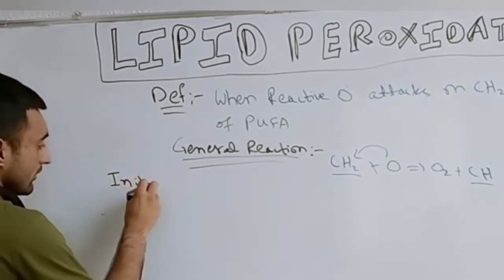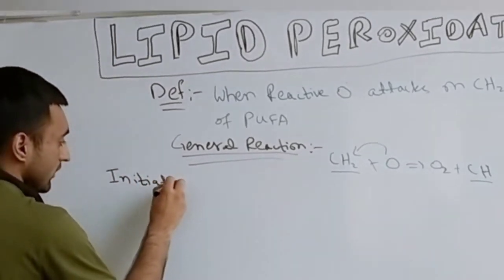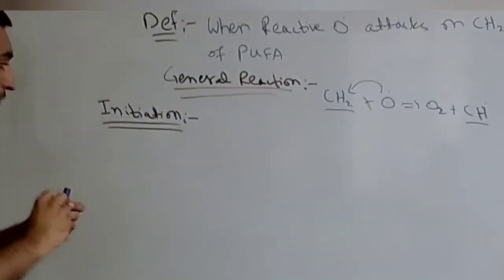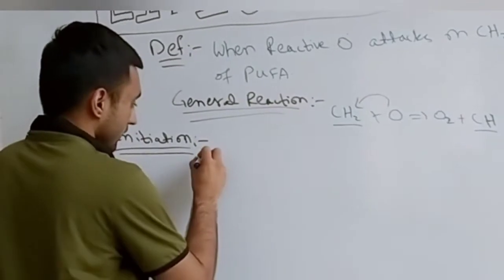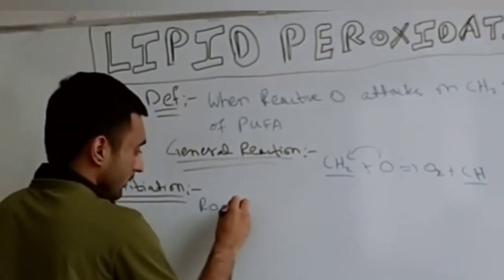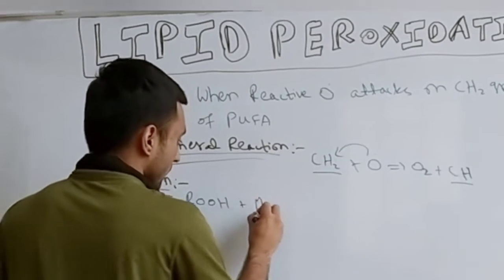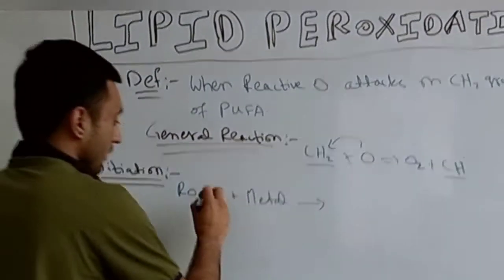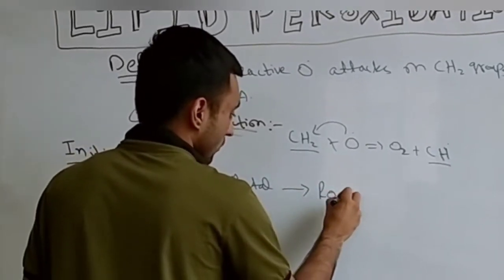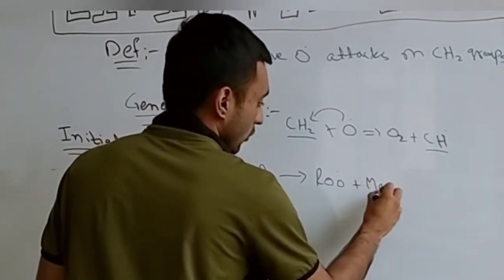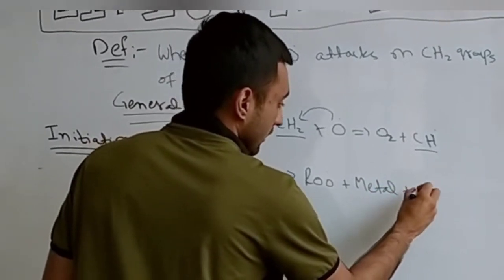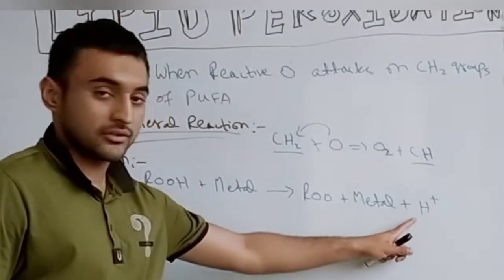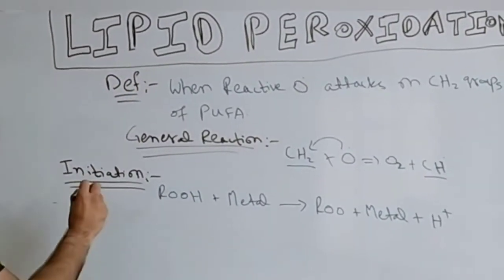First we have initiation — how the lipid peroxidation process is initiated. Suppose we have an R-OH chain; it reacts with a reactive metal. What happens is that the metal is extracted from it, and then a hydrogen ion (H+) is also extracted from it. So this is the initiation process.